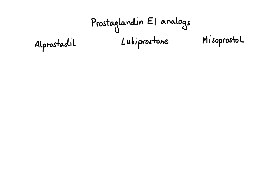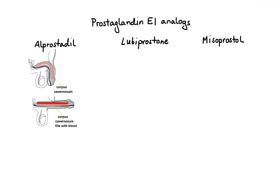Alprostadil has two main therapeutic uses. The first is erectile dysfunction. When alprostadil is applied into the urethra, it acts via direct stimulation of the cAMP pathway to decrease intracellular calcium levels, allowing for relaxation of trabecular smooth muscle and dilation of cavernosal arteries. This ultimately leads to improved erectile function.